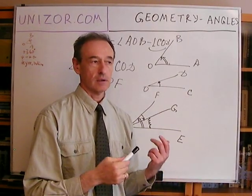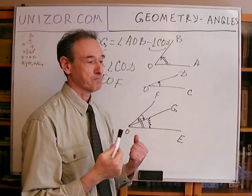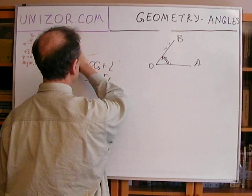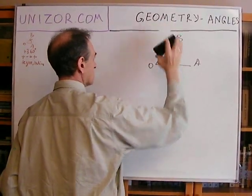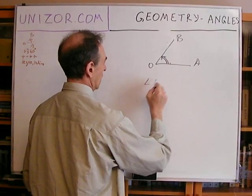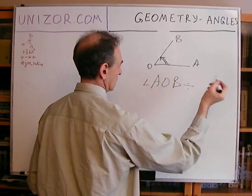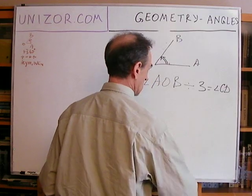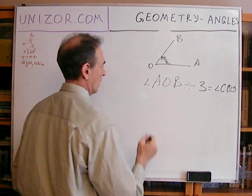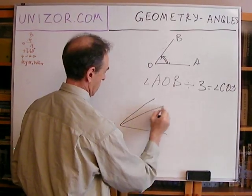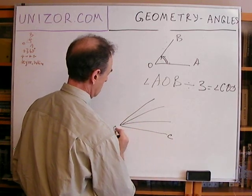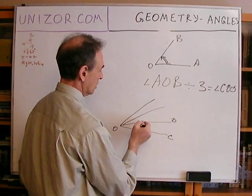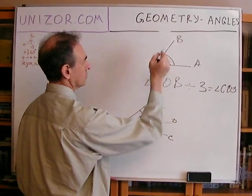Same thing with division. If you have an angle AOD and would like to divide it by a certain natural number — say, by 3 — it means you have to find an angle COD such that if you add it to itself multiplied by 3 — that is, added to itself three times — you will get an angle congruent to the original angle AOD.